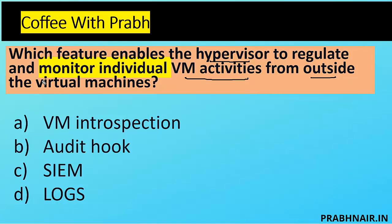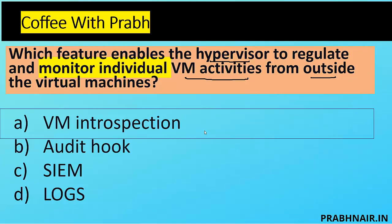So VM introspection is the correct answer. Audit hook is just one feature within VM introspection by which we can fetch logs. SIEM is a complete solution, and logs is basically a reactive option. The question is specifically talking about monitoring individual VM activity from outside the machine, so the answer is A — VMI, also known as Virtual Machine Introspection.